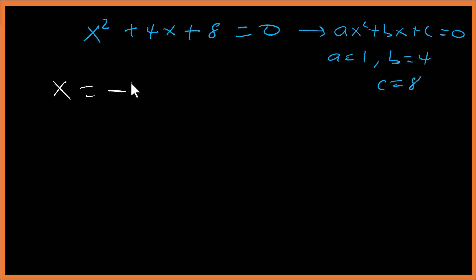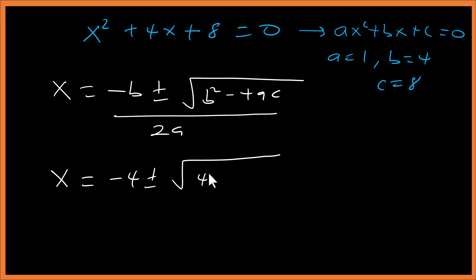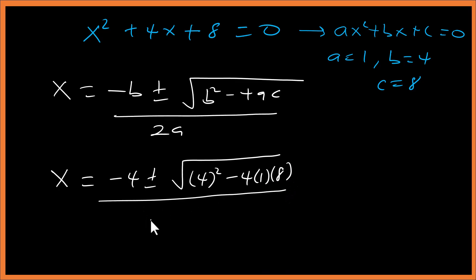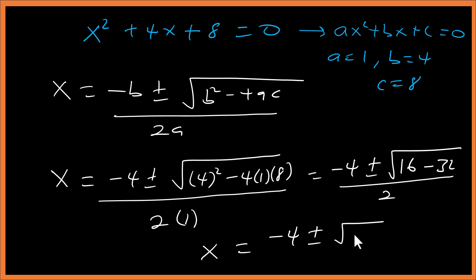Using the quadratic formula x = (−b ± √(b² − 4ac)) / 2a, we get x = (−4 ± √(16 − 4×1×8)) / (2×1), which gives x = (−4 ± √(16 − 32)) / 2, so x = (−4 ± √(−16)) / 2.